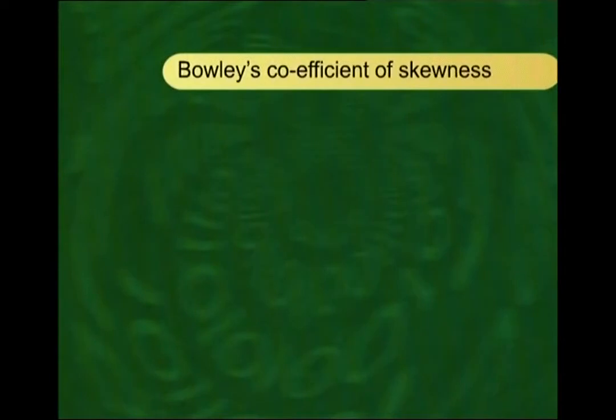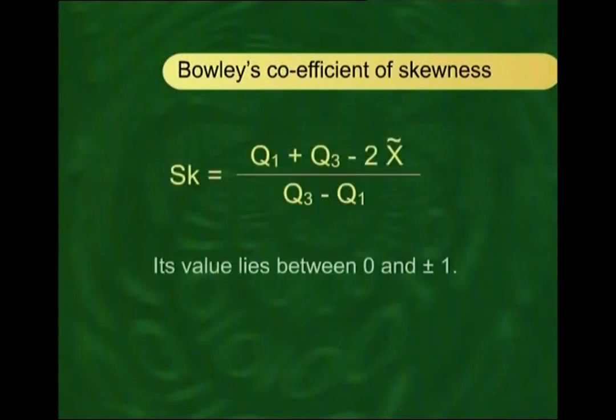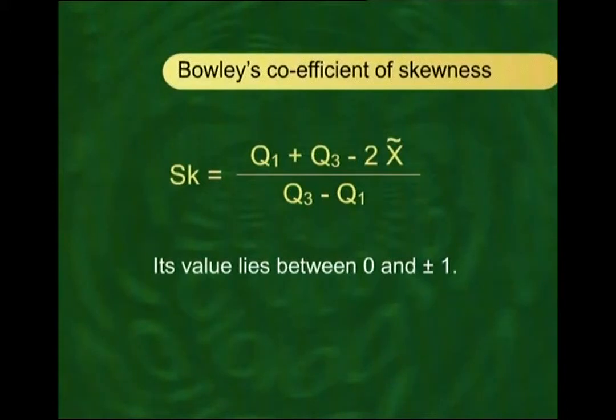You compute Q1 + Q3 − 2X̃. If it is positive, the distribution is positively skewed, and vice versa. Bowley's coefficient is given by Q1 + Q3 − 2X̃ divided by Q3 − Q1. Dividing by Q3 − Q1 gives a unitless pure number, enabling comparison of the skewness of one distribution with another. It has been mathematically shown that this coefficient lies between −1 and +1.